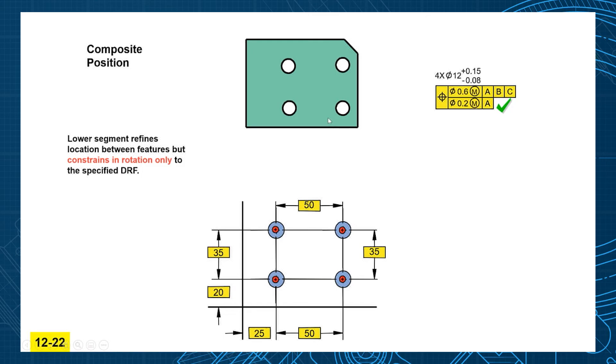They could be down here because I don't really care about where the holes are relative to the edges. They could be up there. They could be down here. They could be anywhere, even rotated on the part, as long as your hole-to-hole pattern is still good to itself.